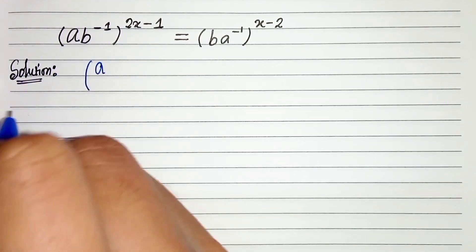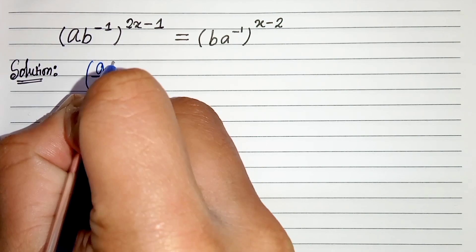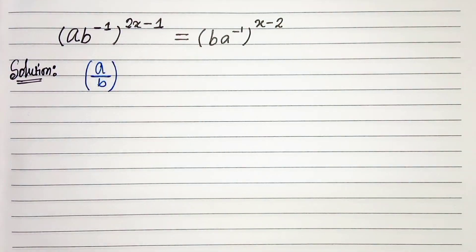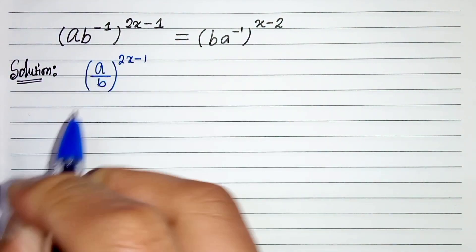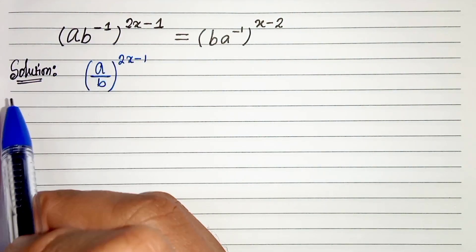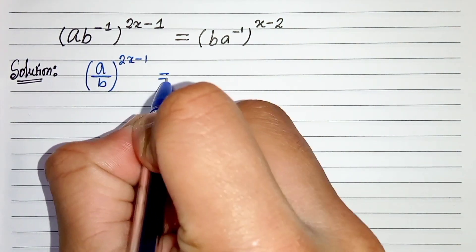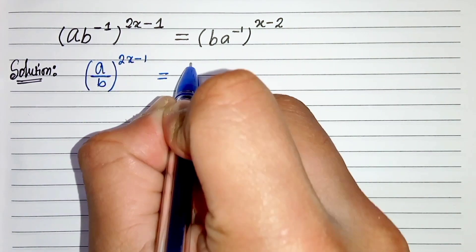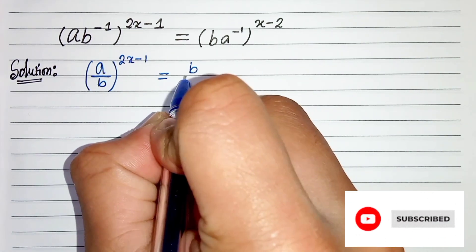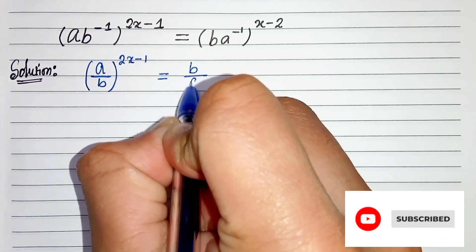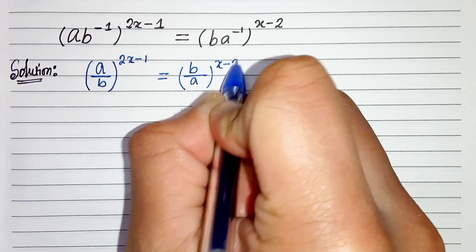First of all, we can write a·b⁻¹ as (a/b)^(2x-1), since b⁻¹ is 1/b. So the right side becomes (b/a)^(x-2), since a⁻¹ is 1/a.